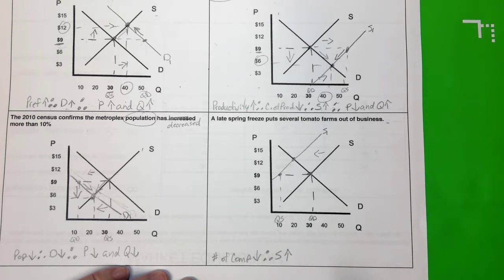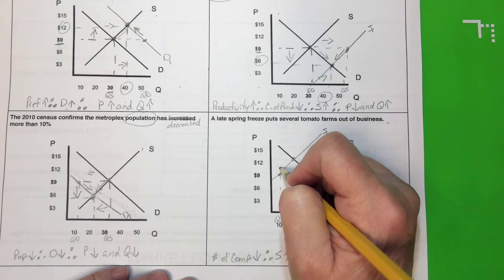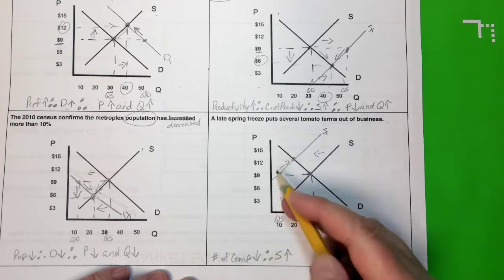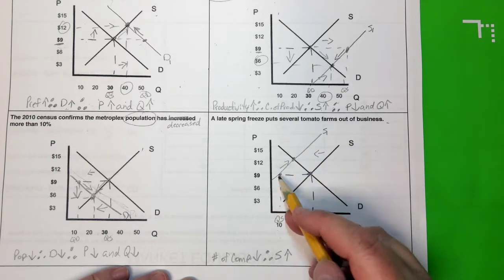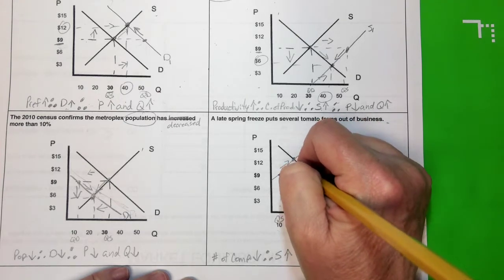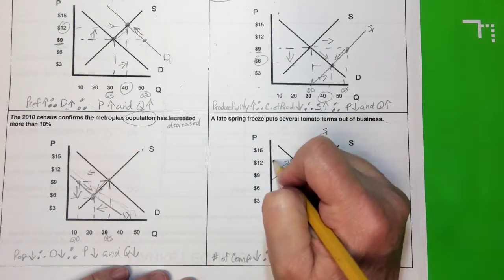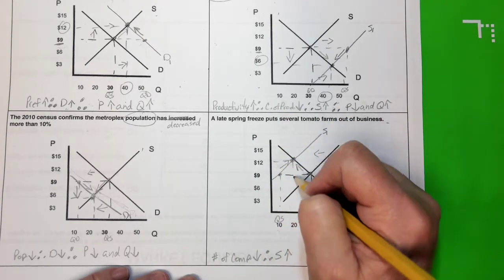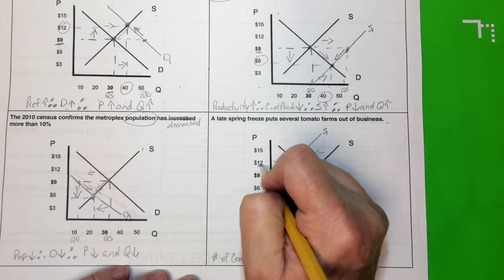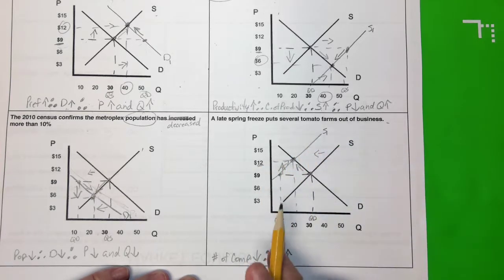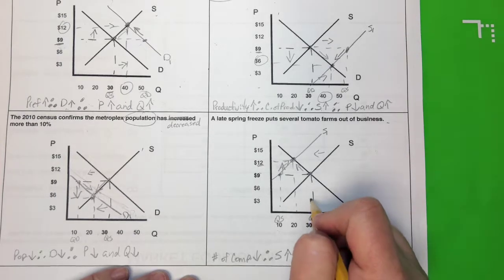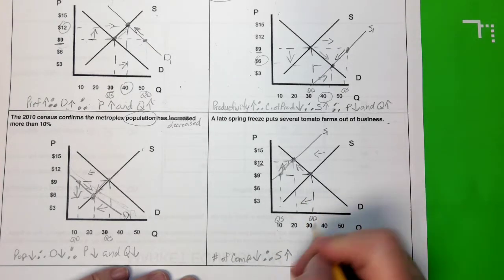Producers say: if you want me to put more tomatoes into the market, I can, but only at a higher price. So the price begins to rise, producers put more product out there, and we as consumers respond by saying a higher price means we don't want to buy as many. Now we end up at a new equilibrium. The equilibrium price of twelve dollars is an increase from the original nine, and the equilibrium quantity of 20 is a decrease from the original of 30.